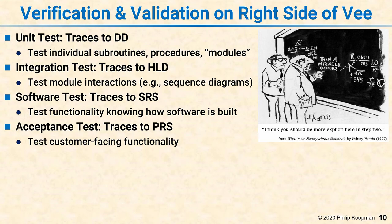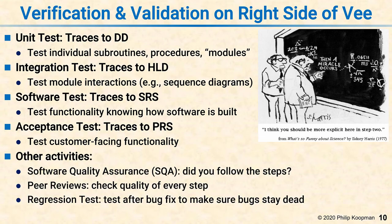Now there are some other activities generally associated with V and V that aren't explicit boxes in the V. One is software quality assurance, which is: did you actually follow the steps? Did you follow the process? Or did you skip steps? Or do you have systematic quality problems? Another one is peer reviews, because every work product is supposed to get peer reviewed — so that's sort of implicit in all the arrows.